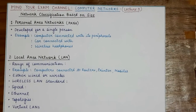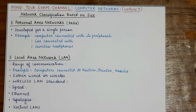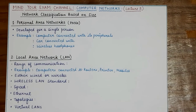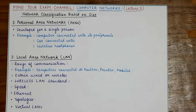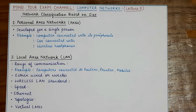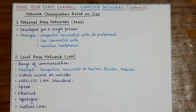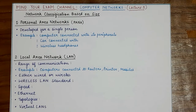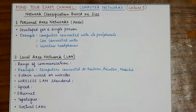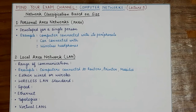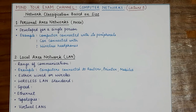Hello students, welcome back to my channel. In this video we will be doing different classifications of computer networks based on their size. Based on size, a network can be classified as a Personal Area Network, a Local Area Network, a Metropolitan Area Network, or a Wide Area Network. In today's lecture we will be seeing the first two types.